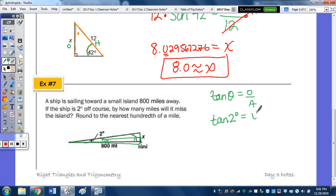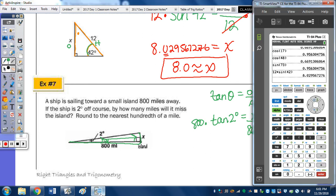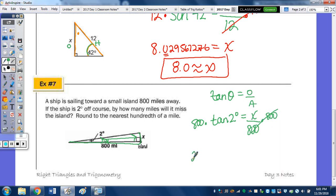So tangent of theta equals opposite over adjacent. We're going to replace theta with our 2 degrees. The side opposite is x, and the 800 is the length of the adjacent. So let's multiply both sides by 800. Go to the calculator, 800 tan of 2 degrees. And we're going to round here to the nearest hundredth of a mile. So this is 936, so that 6 is going to bump the 3 to a 4. To the nearest hundredth, that's approximately 27.94 miles. So you don't have to write your answer in a complete sentence, but you do have to include the appropriate units.